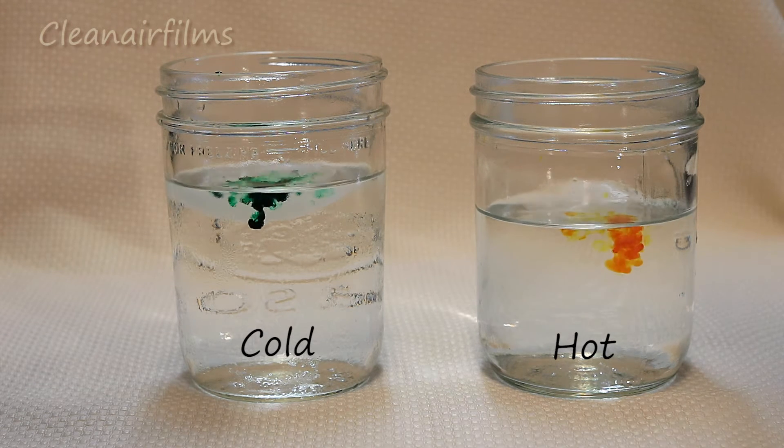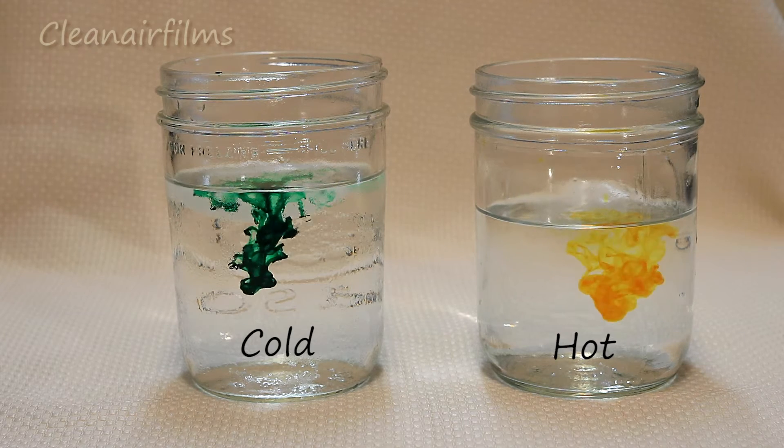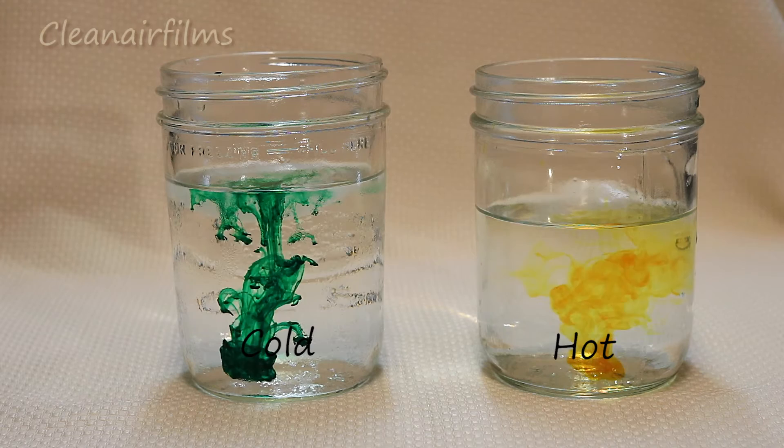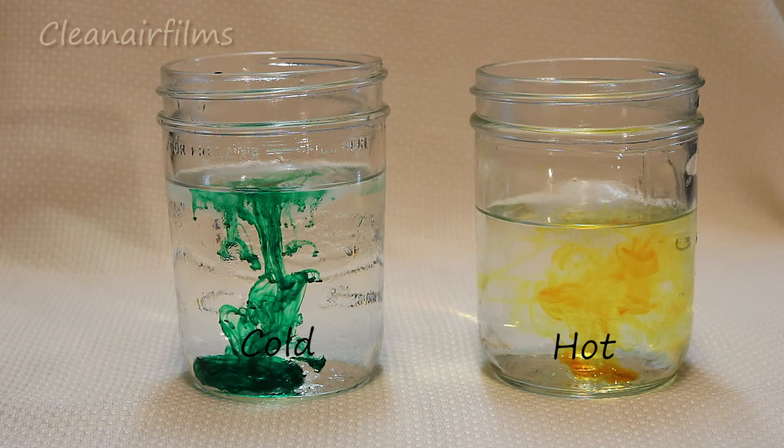Now let's put one drop of food coloring in each jar of water. Now this is interesting. The food coloring is mixing faster in the hot water. Why is this?